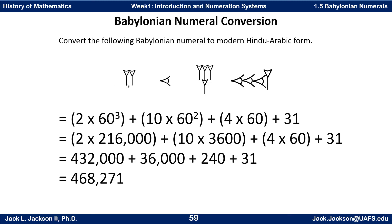This last group has two of these symbols. How big are the groups? If these are single blocks, a stack is 60 long, a square is 60 by 60 or 3,600 blocks, and this is a bigger cube — 60 by 60 by 60, which is 216,000. So each one of these little symbols represents a group of 216,000, and we have two of those: 2 times 216,000 is 432,000. Adding it all up, you get 468,271.